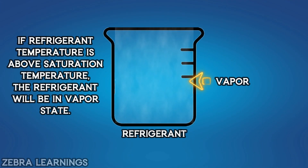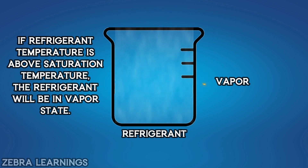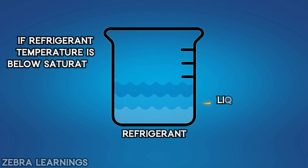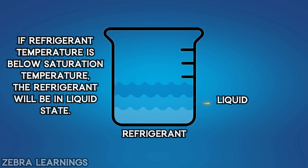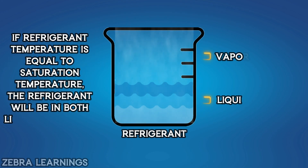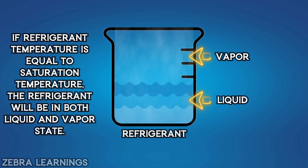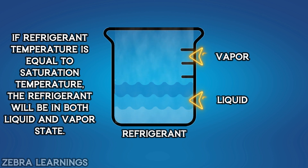If the temperature of a refrigerant is above the saturation temperature, the refrigerant is in the vapor state. If it is below the saturation temperature, the refrigerant is in both liquid and vapor states.